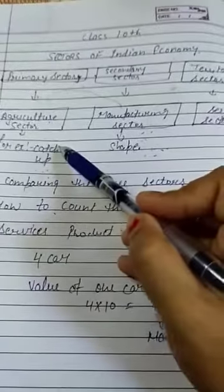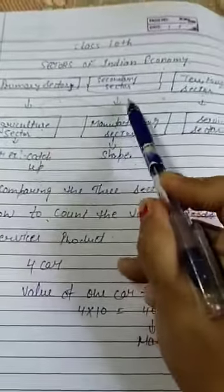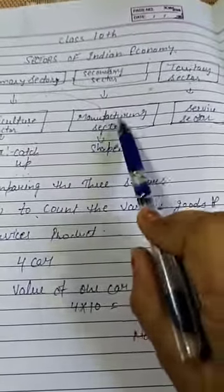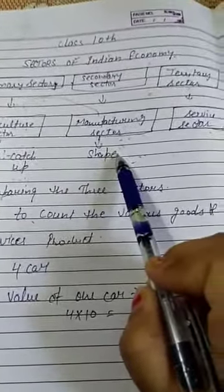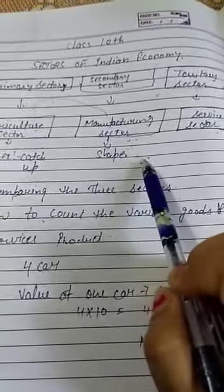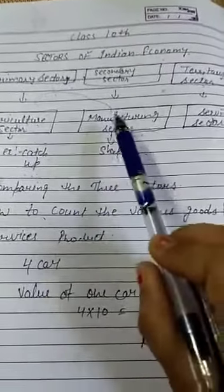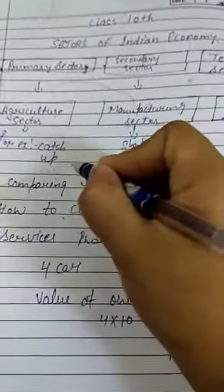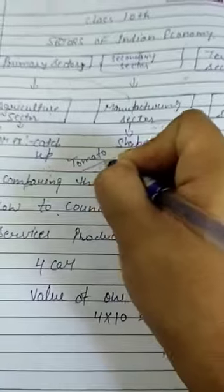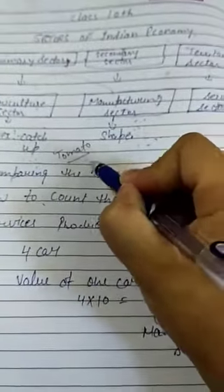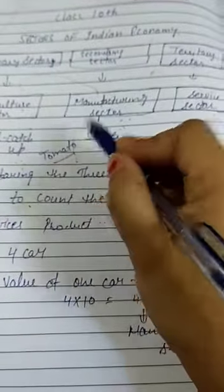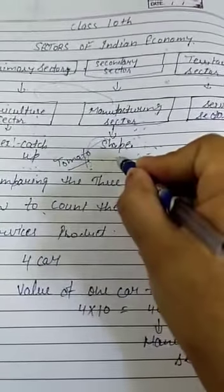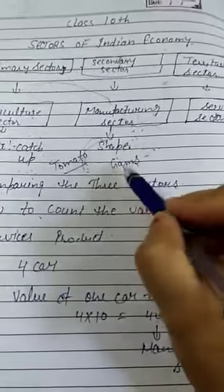Next is manufacturing sector. Manufacturing means natural products are changed into other forms through ways of manufacturing. Natural products like tomato are changed into other forms, other shapes. For example, we have to make jams. We need to make jams.